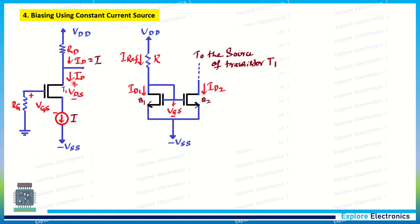The next biasing method is biasing using a constant current source. In this amplifier circuit, the transistor is biased using a current source that produces current I. Since it is connected at the source of the transistor, the drain current and source current are equal, so the current through RD — that is, ID — also equals I. The current source is implemented using a current mirror circuit built with two transistors.